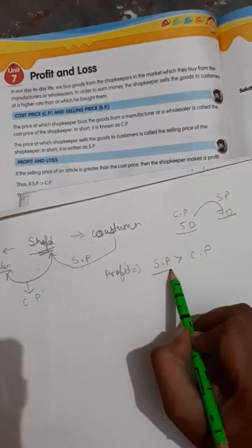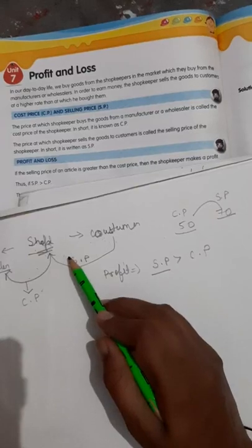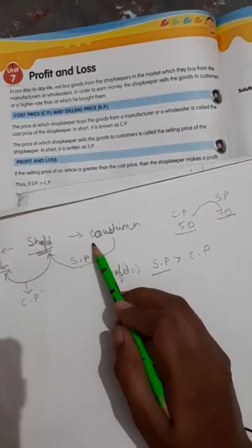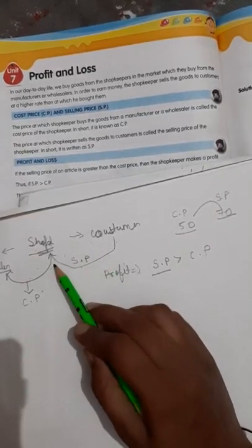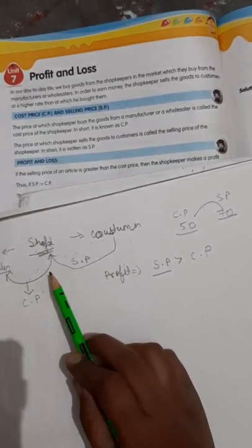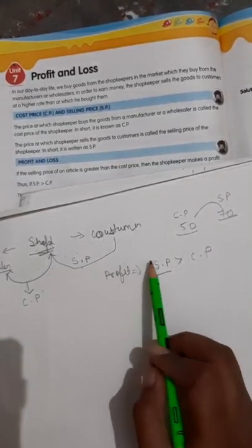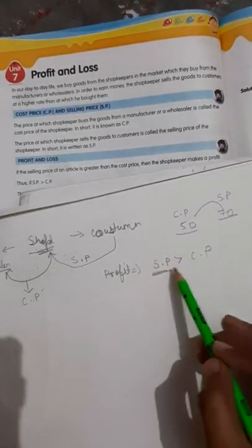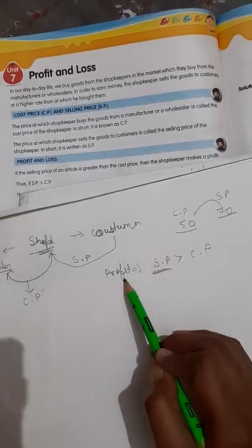If SP is greater, then the shopkeeper will have some earning. That is why they are opening their shops and doing work — because they are getting some profit. So always remember: whenever SP is greater than CP, it means there is a profit. Just the opposite applies for loss.